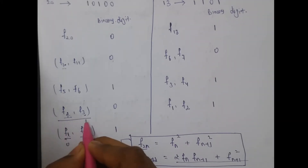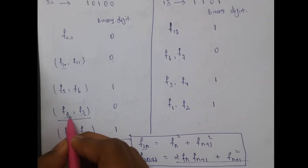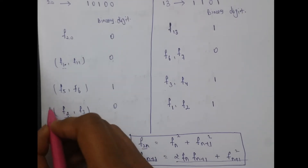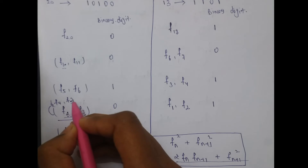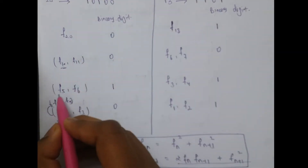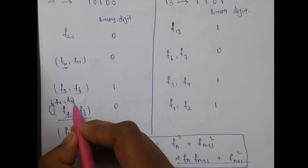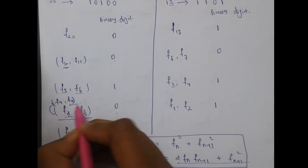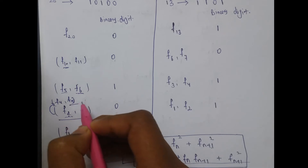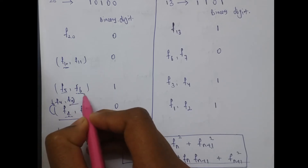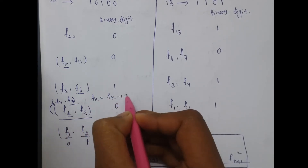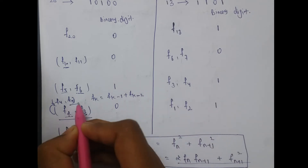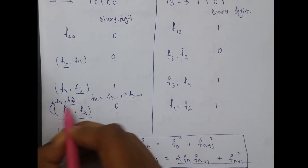But a problem arises here. With n=2, we can only calculate f(4) and f(5) — that is f(2n) and f(2n+1). But for calculating f(10) we need f(5) and f(6). We have generated f(5) but we need f(6). In this case f(6) can be calculated by the standard formula: f(k) = f(k-1) + f(k-2), so f(6) = f(5) + f(4).